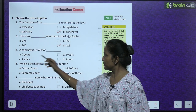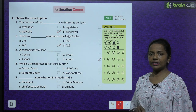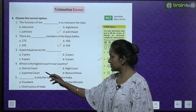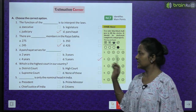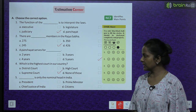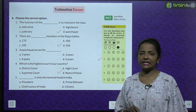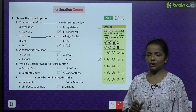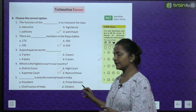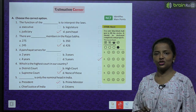A panchayat serves for how many years? Options: 2, 3, 4, 5. Answer: A panchayat serves for 5 years. Which is the highest court in our country? Options: District Court, High Court, Supreme Court, none of these. Answer: Supreme Court is the highest court. Who is only the nominal head in India? Options: President, Prime Minister, Chief Justice of India, citizens. Answer: The President is only the nominal head.